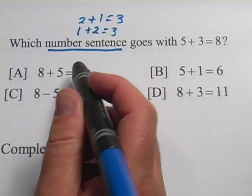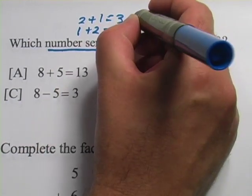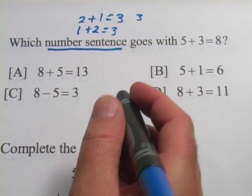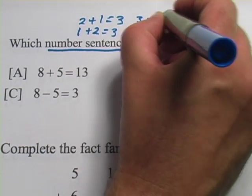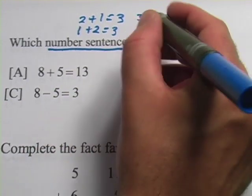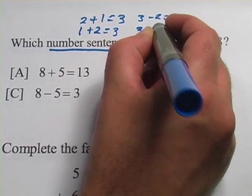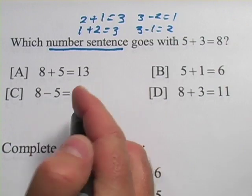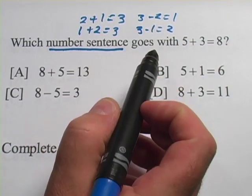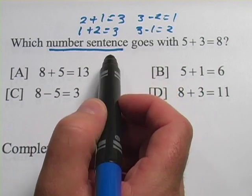And there's actually two more sentences, number sentences, that we can add to this fact family. If we start with the 3 and we use subtraction, 3 minus 2 equals 1, still using just 1, 2, and 3. And then another one, you've probably got this one figured out already, 3 minus 1 equals 2. So those are the four number sentences that create the fact family around 1, 2, and 3.